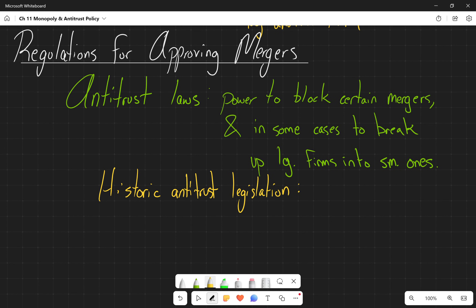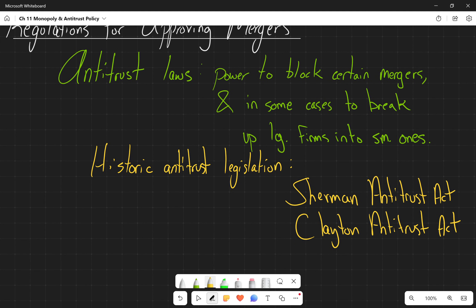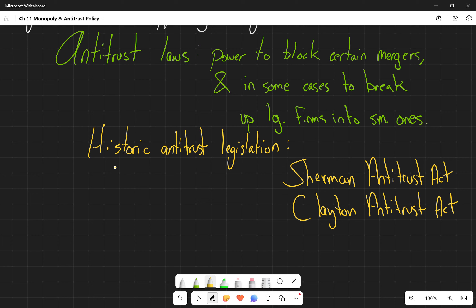So we've got some historic antitrust legislation. We've got a set of three for the most part, though you're often going to hear the Sherman Antitrust Act discussed, then the Clayton Antitrust Act, and then the third one which is not as well known is the Celler-Kefauver.